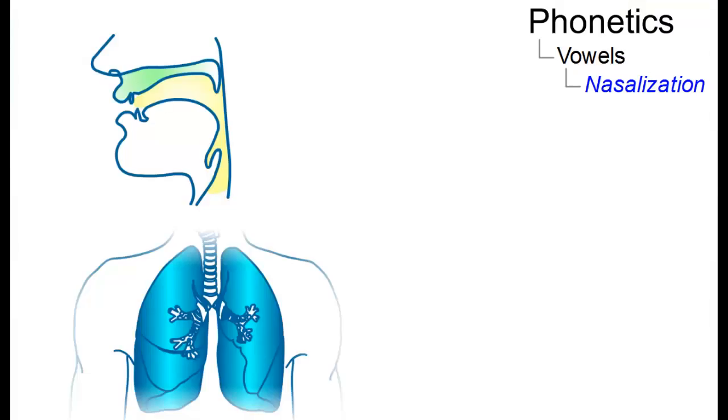As you know, vowels are speech sounds that use pulmonic air, that is, air coming from the lungs. And they involve a less extreme narrowing of the vocal tract than consonants.